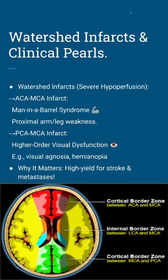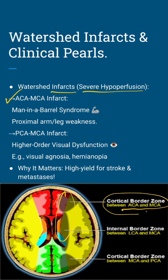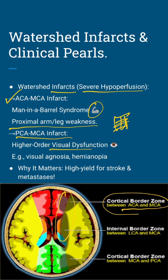Now let's get clinical. Watershed infarcts hit during severe hypoperfusion. First up, an ACA-MCA infarct — this is your man-in-a-barrel syndrome. Picture proximal arm and leg weakness, like someone stuck in a barrel. Super testable. Then a PCA-MCA infarct brings higher-order visual dysfunction.